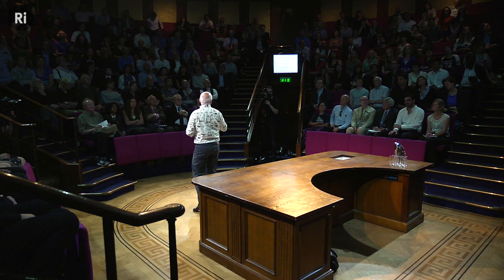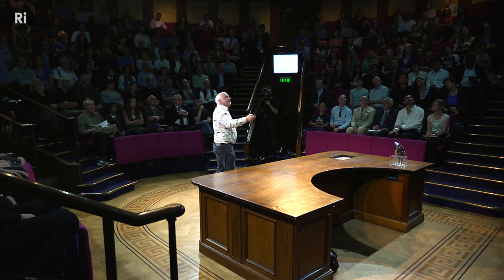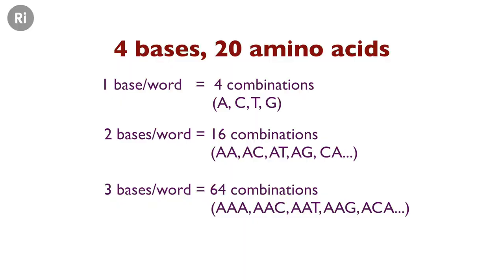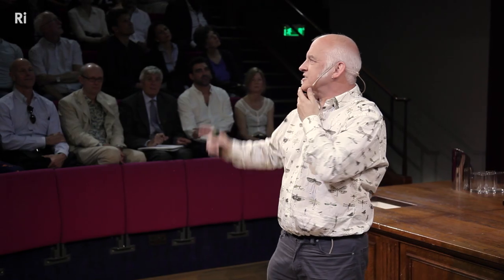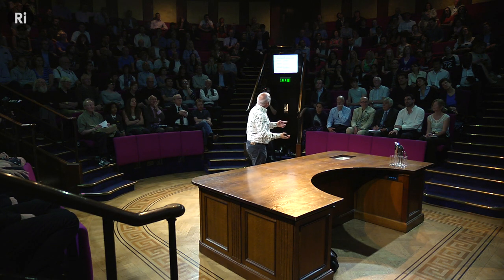It wasn't all wrong, however, because by doing some fairly simple maths they came up with some fairly straightforward limits to their problem. If you have four bases — A, C, T, and G — and each base is a word corresponding to an amino acid, then you can only have four amino acids, so that's no good. If you've got two bases as the unit, you've got 16 combinations — and the magic number is 20, so that doesn't work either. You need three bases, giving 64 combinations. But then what do you do with the other 44? So people got very tied up in complicated ways of trying to get rid of those extra 44 combinations.